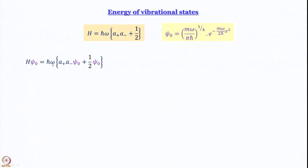Applying the Hamiltonian: H·ψ_0 = ℏω·(a_plus·a_minus·ψ_0 + (1/2)ψ_0) = E·ψ_0. We know that a_minus·ψ_0 = 0, since ψ_0 is the lowest energy wave function and there is nowhere lower to go. Therefore even if you apply a_plus to that result, a_plus·0 = 0. Conveniently, the first term becomes 0 and only the second term survives.